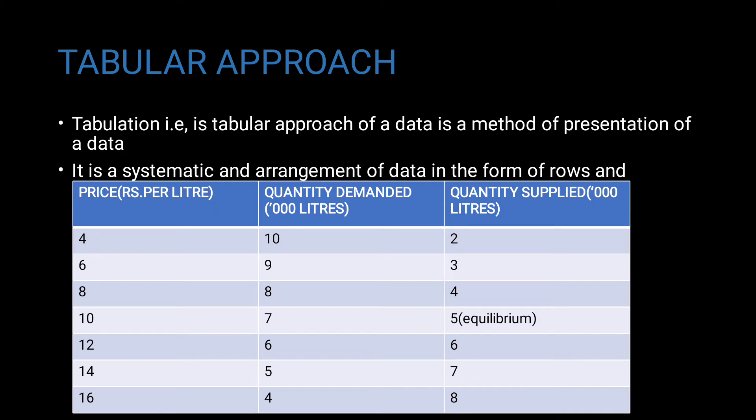The first alternative is the tabular approach. In the tabular approach, data is presented in a tabulation form — it is a systematic and arithmetic arrangement of data in the form of rows and columns. The following table shows the tabular approach between milk quantity and its price.